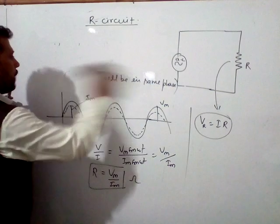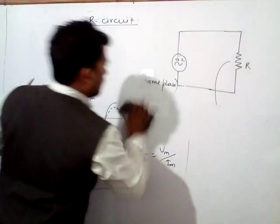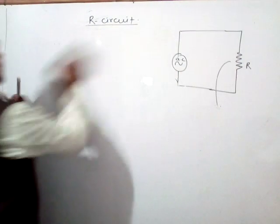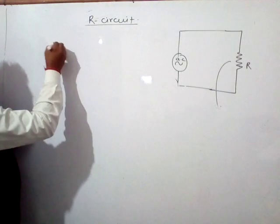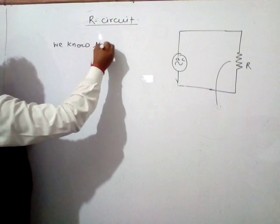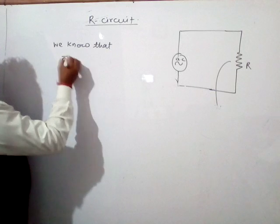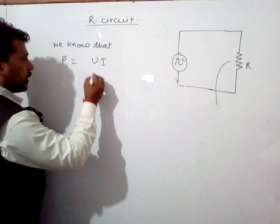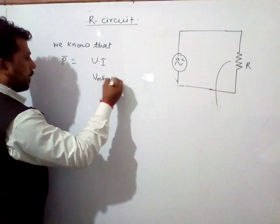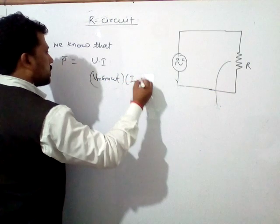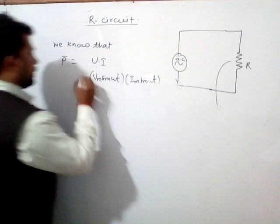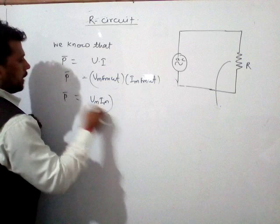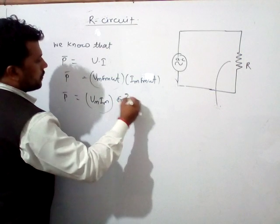The power in the R-circuit: the average power equals voltage into current. Putting in the values, this is Vm sin(ωt) times Im sin(ωt). So P-bar equals Vm times Im times sin²(ωt).